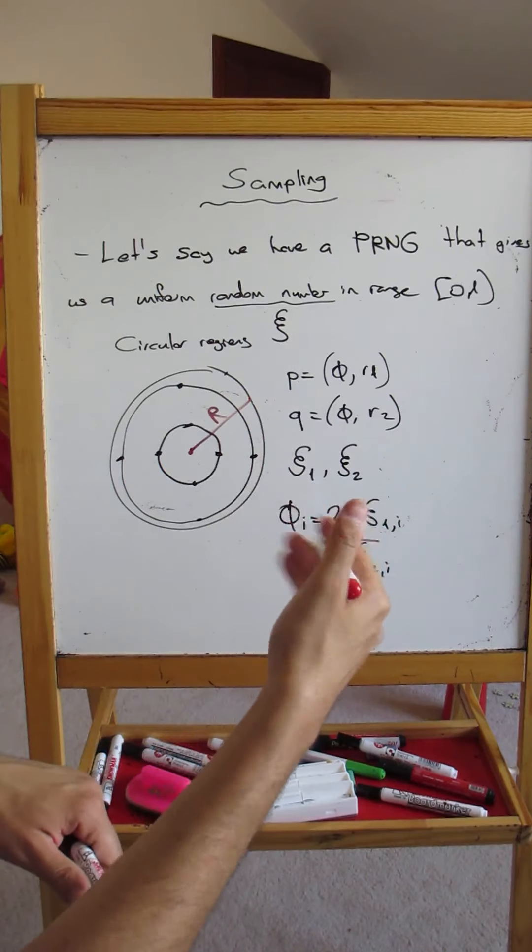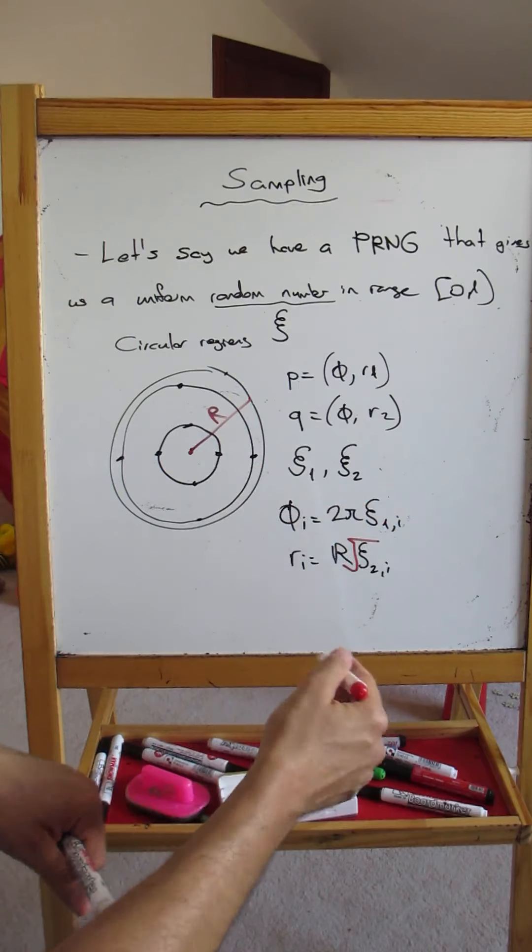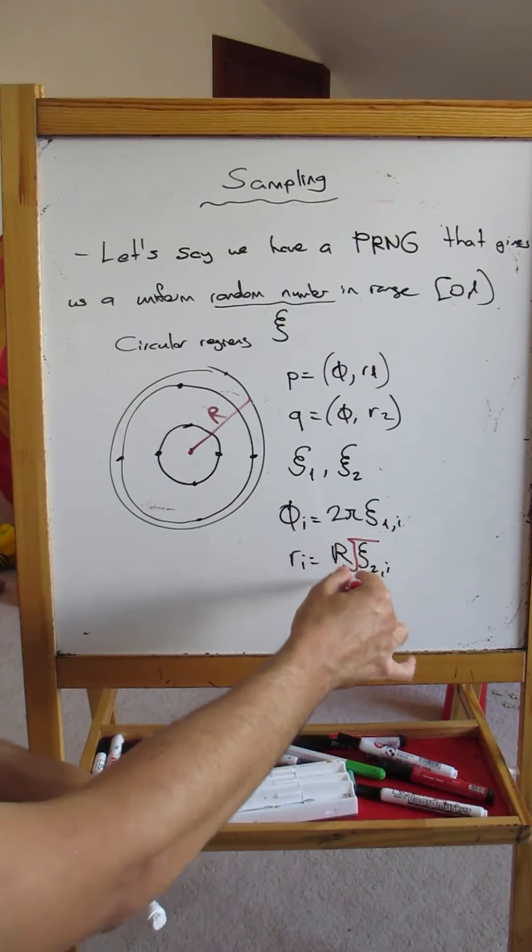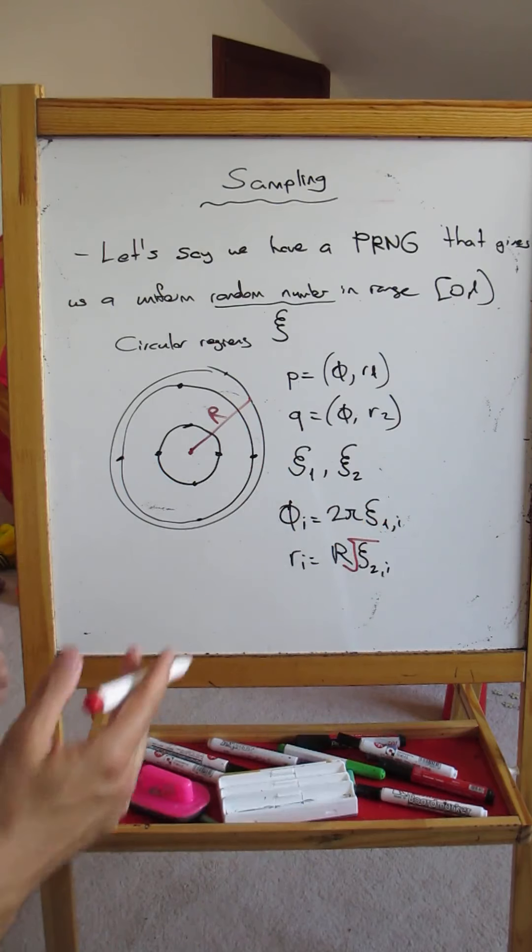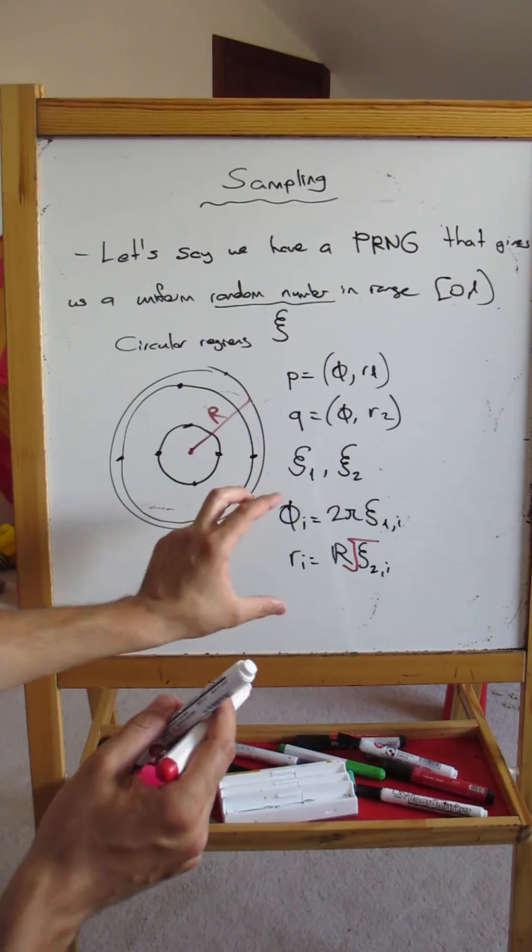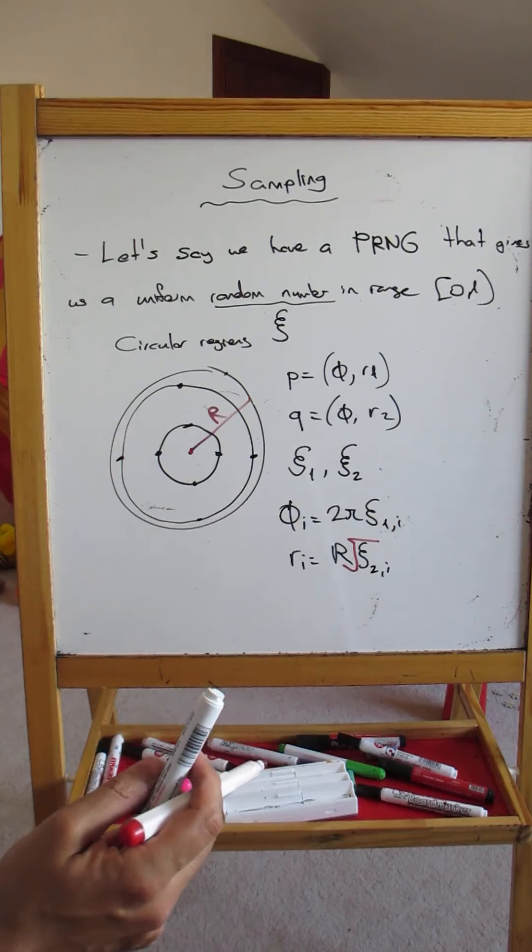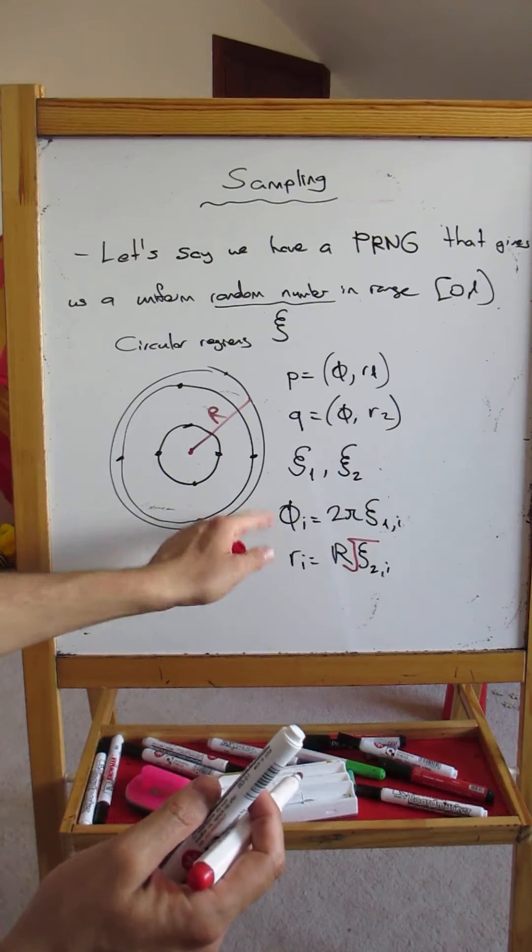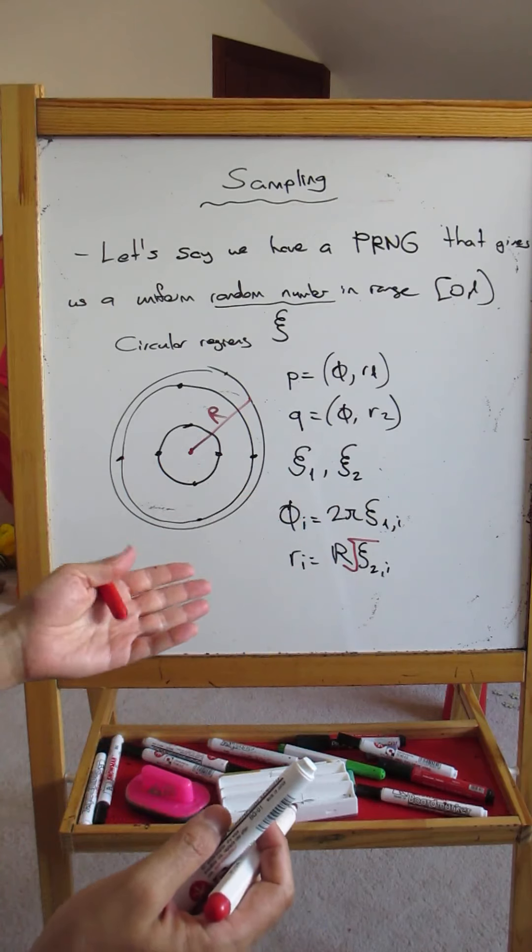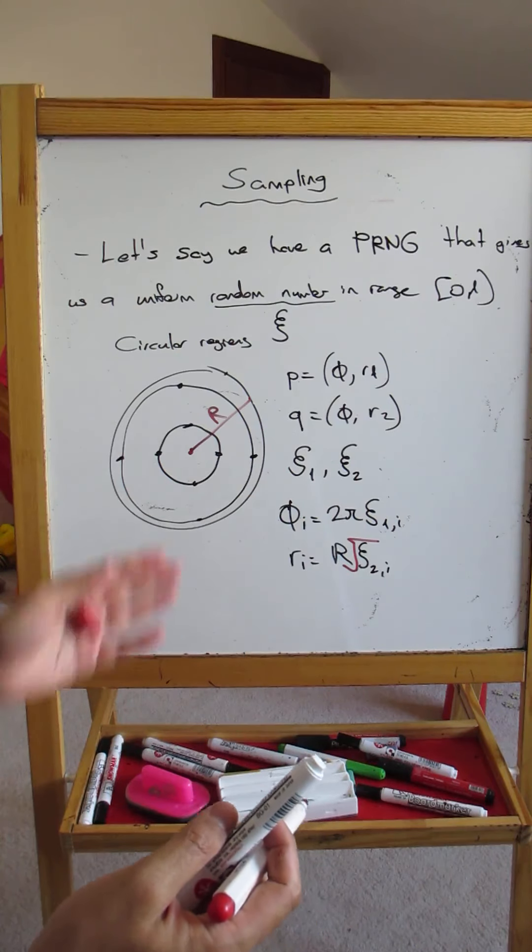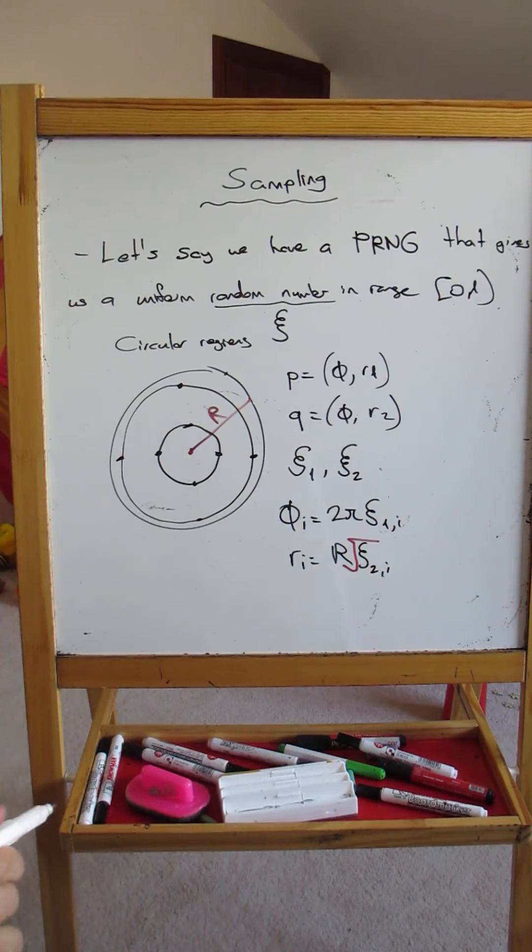We will officially derive where this square root comes from, but if you want to uniformly sample a disk, this should be the method for selecting the polar coordinates. After you compute the polar coordinates, you can convert them to cartesian coordinates to find the x, y values of your points.